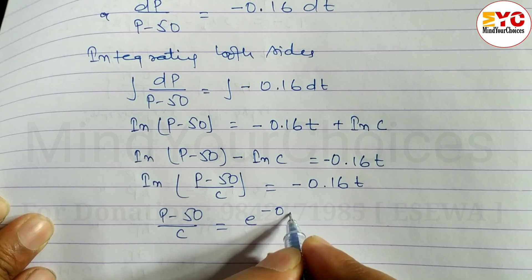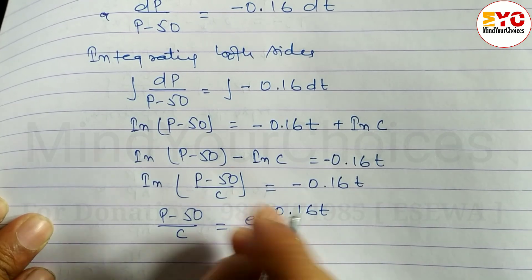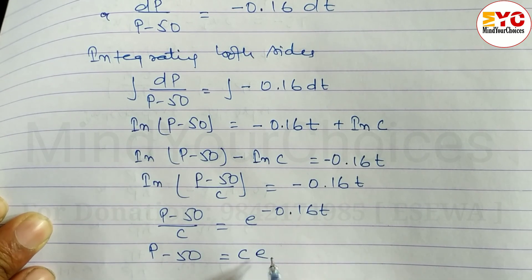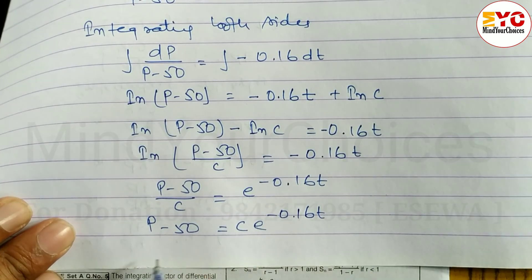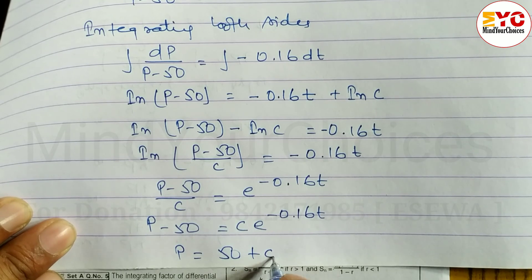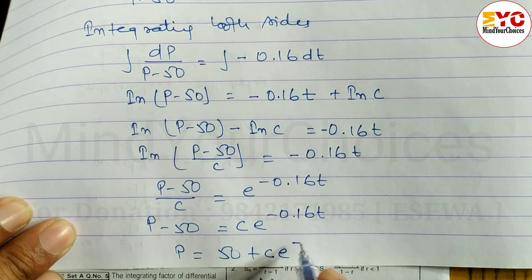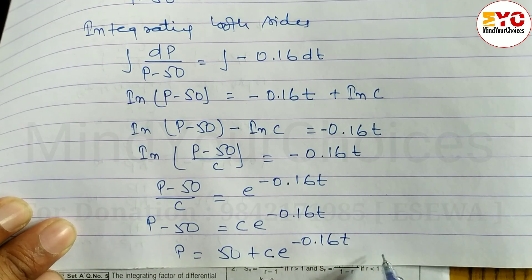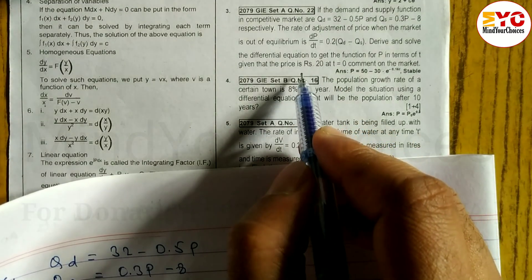Cross multiplying: p − 50 = c·e^(−0.16t). Solving for p: p = 50 + c·e^(−0.16t). This is equation 1.